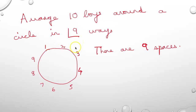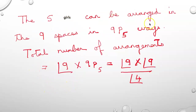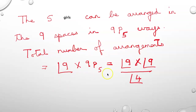After arranging the 10 boys, there are 9 spaces left between them, and the 5 girls can be arranged in these 9 spaces in 9P5 ways. So the total number of arrangements by the fundamental principle of counting is 9 factorial multiplied by 9P5, that is 9 factorial into 9 factorial divided by 4 factorial.